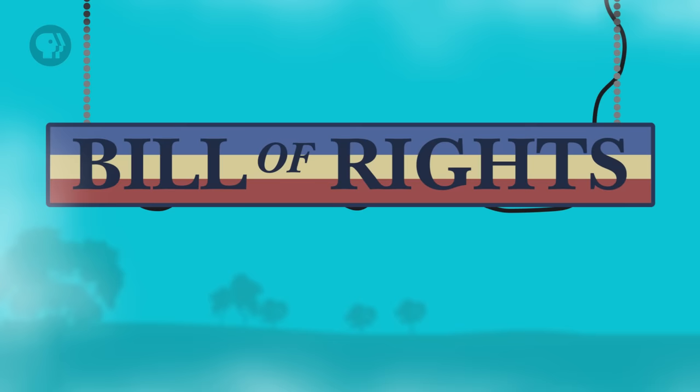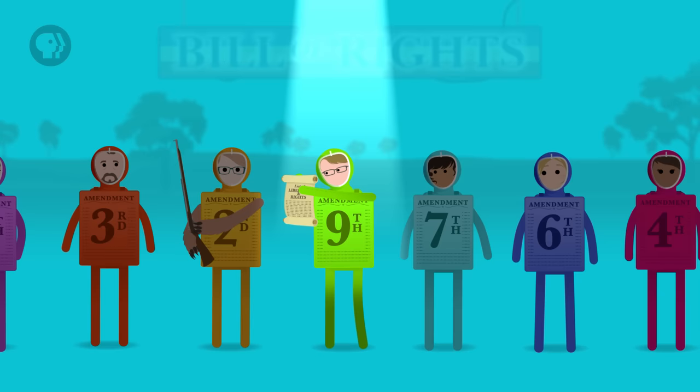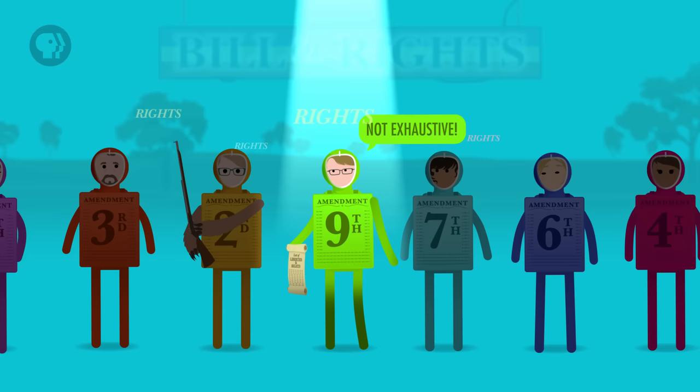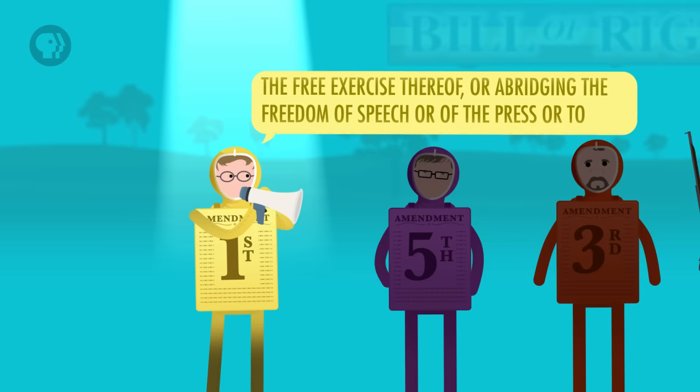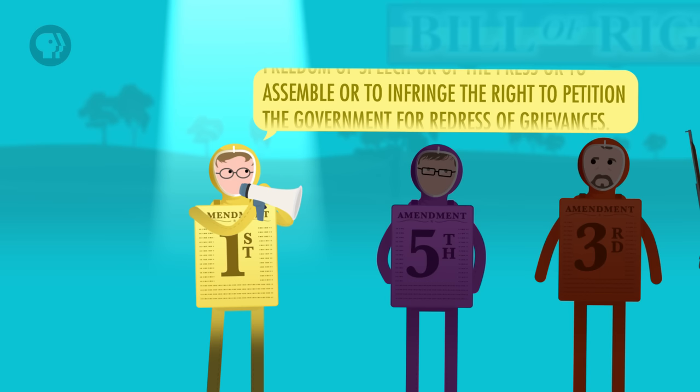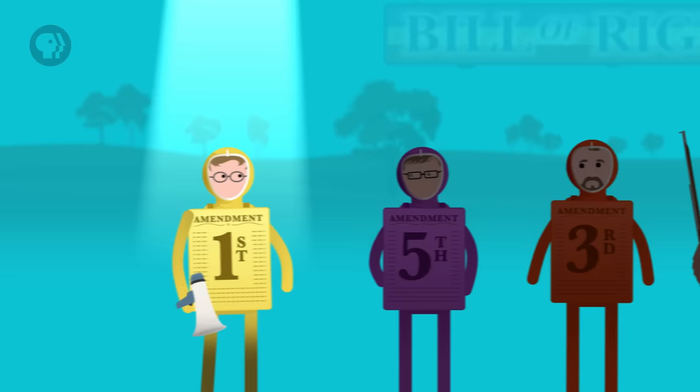So now that we understand the difference between civil rights and civil liberties, let's focus on the liberties and try to figure out what they are and where they come from, with some help from Thought Bubble. Civil liberties are contained in the incredibly unhelpfully named Bill of Rights, which isn't even called that in the Constitution — it's just the name we give to the first ten amendments. The Ninth Amendment is included to remind us that the list of liberties in the other amendments isn't exhaustive. There might be other rights out there, but the Constitution doesn't specifically say what they are. The First Amendment says that Congress shall make no law respecting the establishment of religion or abridging the free exercise thereof, or abridging the freedom of speech or of the press, or to assemble, or to infringe the right to petition the government for redress of grievances. Pretty straightforward.